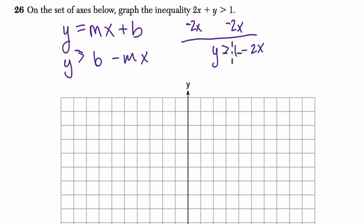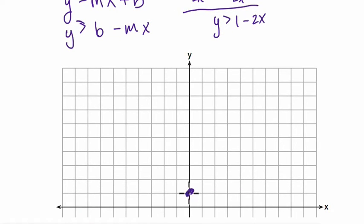So b is our intercept, that's just 1 here, and our slope is negative 2. So that means if I go up twice on the rise, I go back once on the run. Our slope is looking something like this.